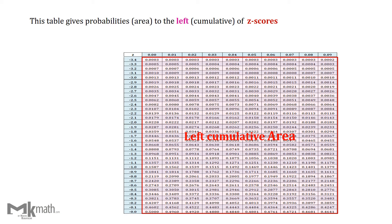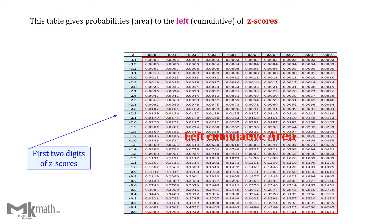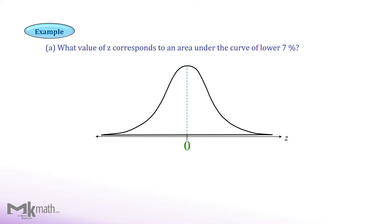The table gives the area or probability to the left of z-scores. The first column shows the first two digits of z-scores and the top row shows the second decimal place of z-scores. Let's take a look at the first example.